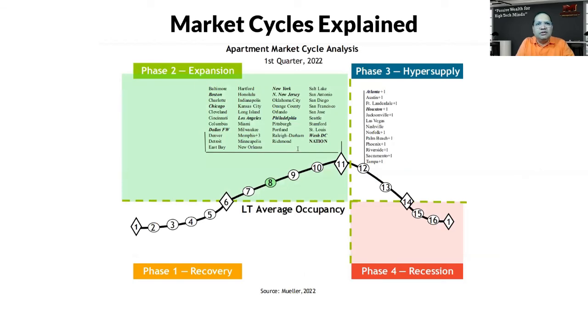If you see the chart given by Dr. Mueller—Dr. Mueller with the University of Denver puts out a market cycle chart every quarter—you can see that in Phase 3, hyper supply, he has about one-third of the markets in equilibrium and two-thirds of the markets.